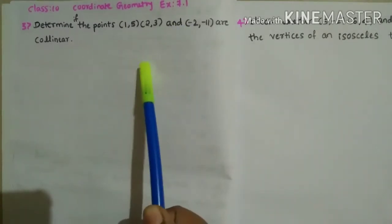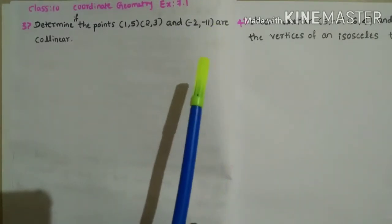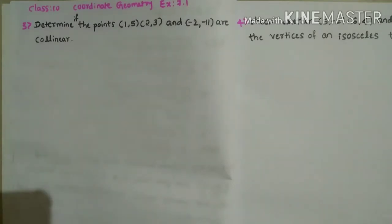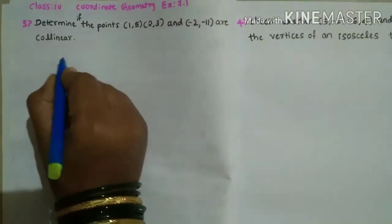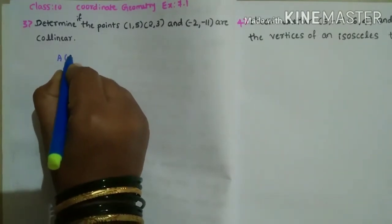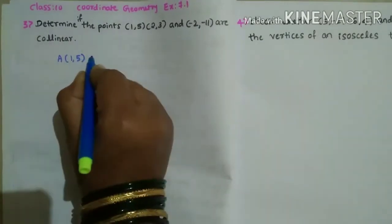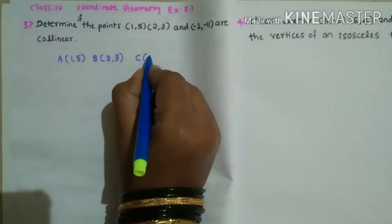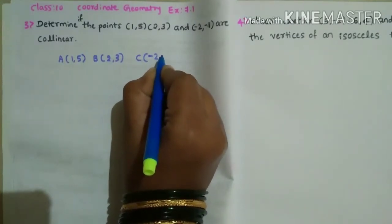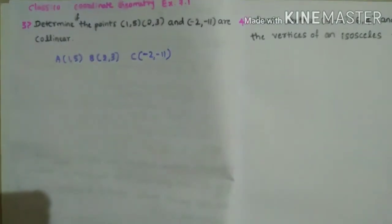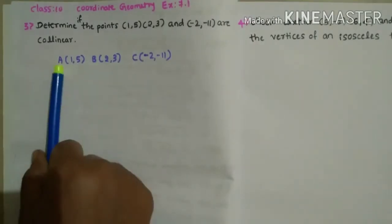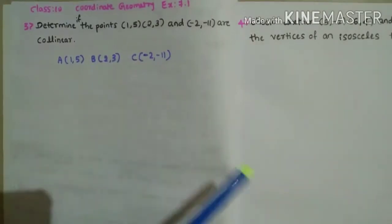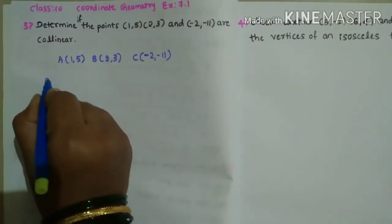Collinear means all three points should be on the same line — we have to identify whether they are. For that, take these points: first point A as (1,5), second point B as (2,3), and third point C as (-2,-11). Now find the distance between A and B first.